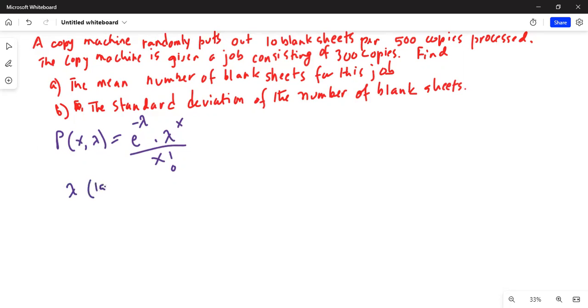Lambda is equal to mean number of occurrences per unit volume, time, area, etc.